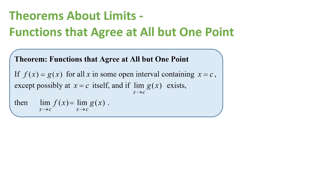The first thing it says is I have a function f of x and g of x that are equal. What that means is that they would have the same outputs for all x's in some open interval containing x equals c — for all x's that are around x equals c, except possibly at x equals c itself.